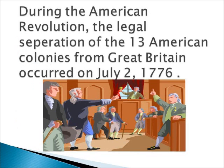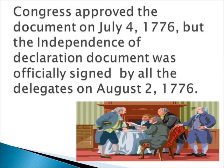During the American Revolution, the legal separation of the 13 American colonies from Great Britain occurred on July 2nd, 1776. Although the signing of the document is celebrated on July 4th, it is not the date when all 13 colonies signed the document. Congress approved the document on July 4th, 1776, but the Declaration of Independence was officially signed by all the delegates on August 2nd, 1776. So August 2nd, 1776 was when it was really officially completed.